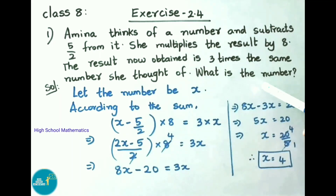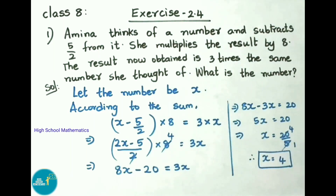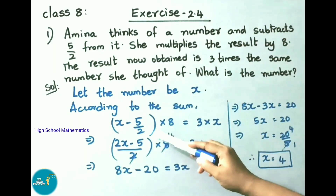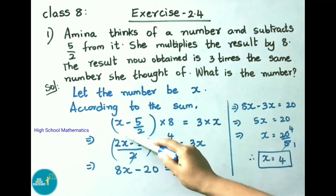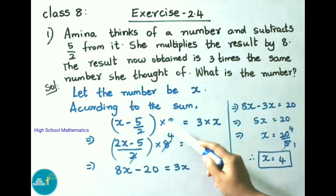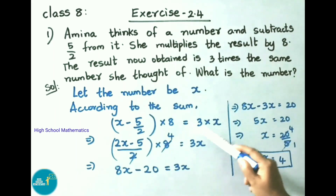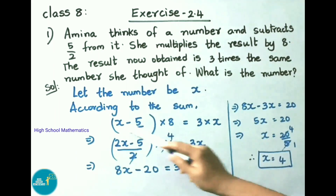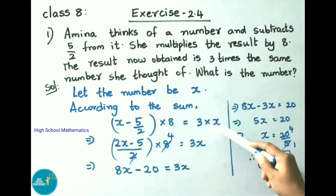Let us see the solution. Let the number be x. According to the sum, she subtracted 5/2 from the number she thought of, then multiplied it by 8, and that equals 3 times the number she thought of. So: (x − 5/2) × 8 = 3x.